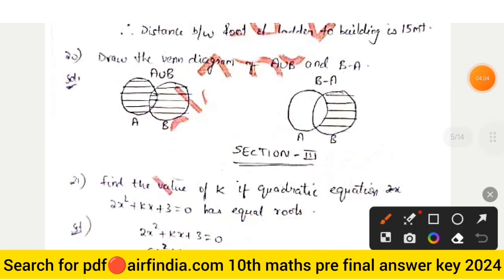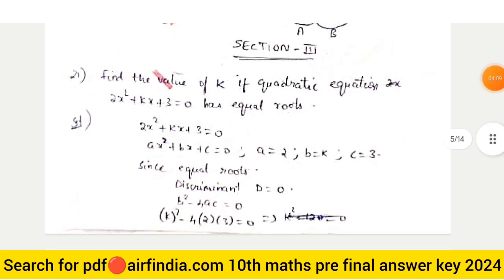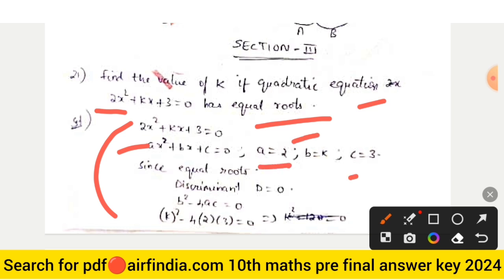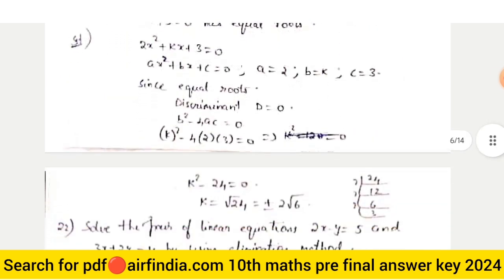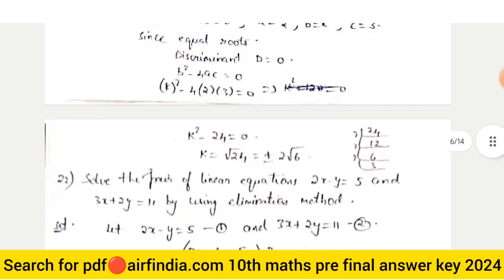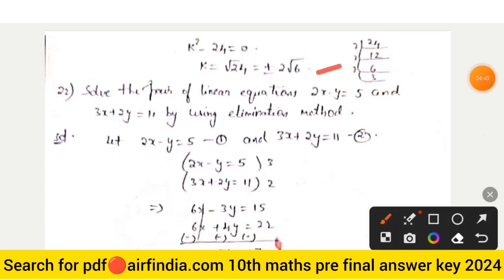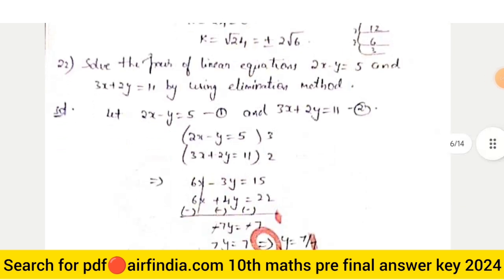Section three — find the value of k if the quadratic equation 2x² + kx + 2 = 0 has equal roots. With a = 2, b = k, c = 2, using b² − 4ac = 0: k² − 4(2)(2) = 0, so k² − 16 = 0... actually k² = 24, giving k = ±2√6.